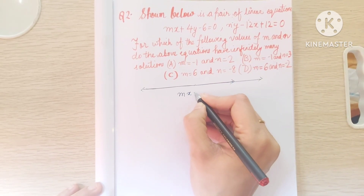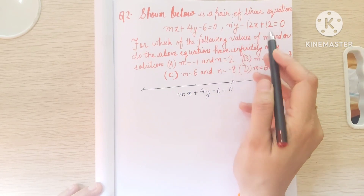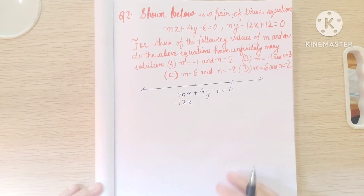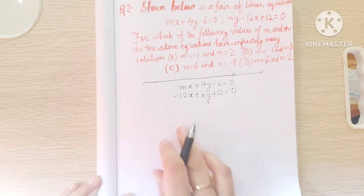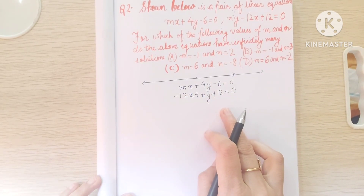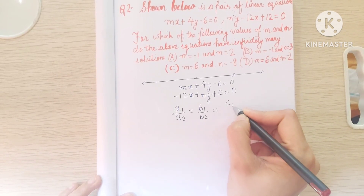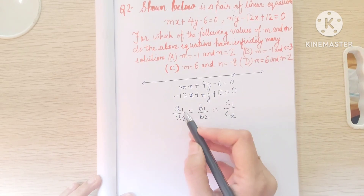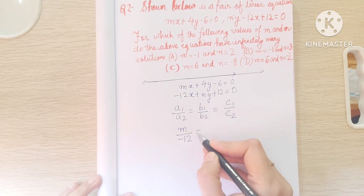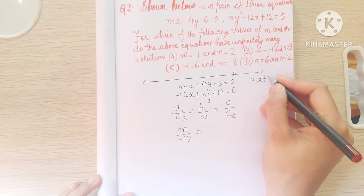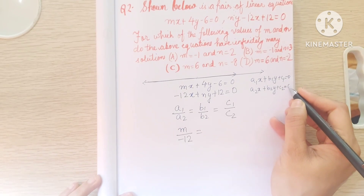First, let's write and arrange both equations: mx plus 4y minus 6 equals 0, and carefully: minus 12x plus ny plus 12 equals 0. For infinitely many solutions for a pair of equations, we know that a1 by a2 equals b1 by b2 equals c1 by c2 — all ratios must be equal. Here a1 by a2 is m by minus 12, and b1 by b2 is 4 by n.